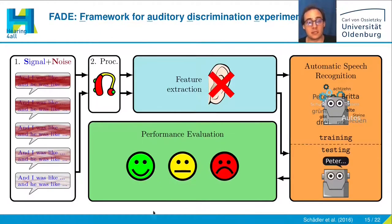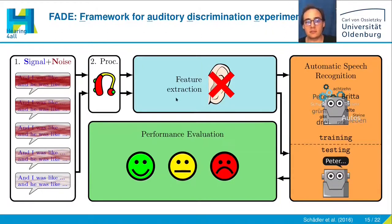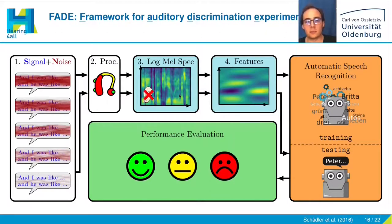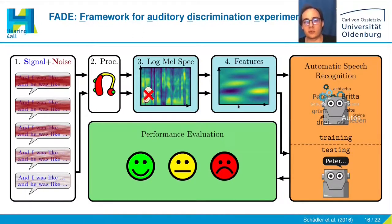FADE was inspired by automatic speech recognition systems and works as follows: first, you take speech signals and noise and mix them at different signal-to-noise ratios. These mixtures can be processed with a hearing aid algorithm, though this was not done in this work. After that, features are extracted based on a so-called log-mel spectrogram — a spectrotemporal representation of the signal — which can also be modified to include hearing impairment. Features sensitive to spectrotemporal modulations are then extracted.